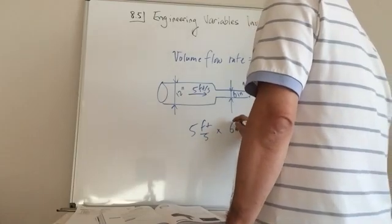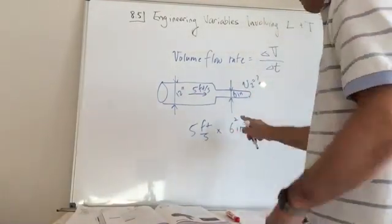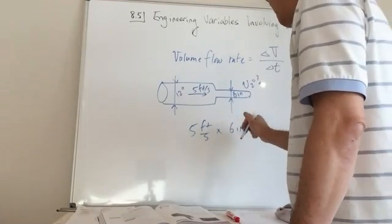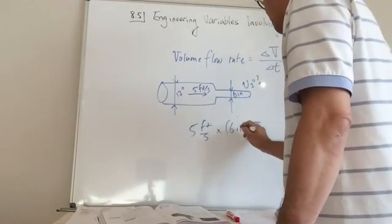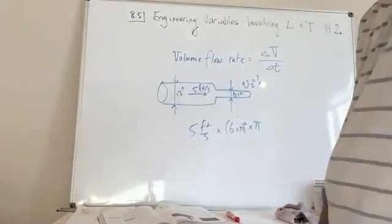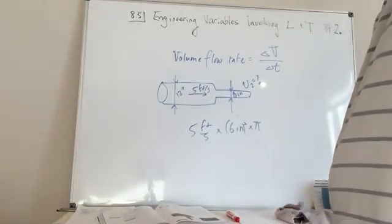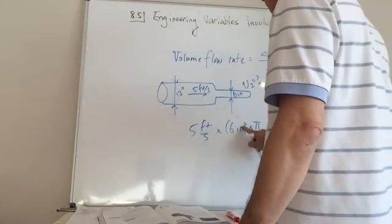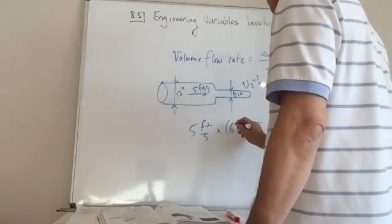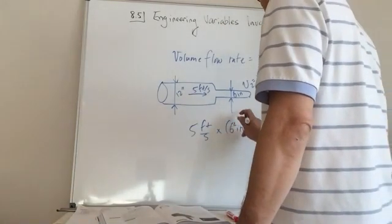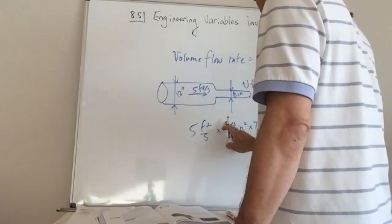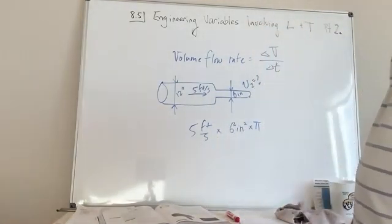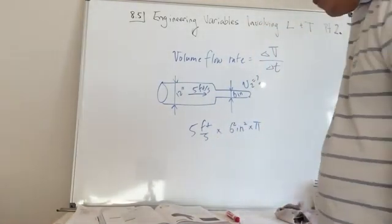So it's going to be 6 inches squared times pi — that's pi r squared. When you do this out, you get inches squared. So this is the volume flow rate.